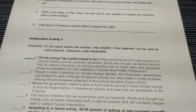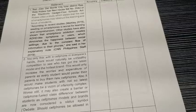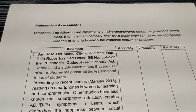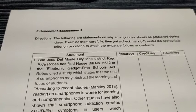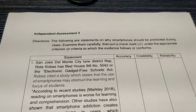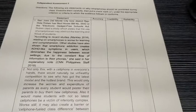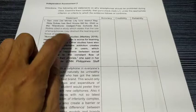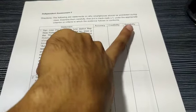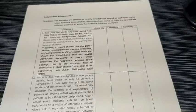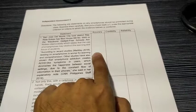The following are statements on why smartphones should be prohibited during class. Examine them carefully, then put a check mark under the appropriate criterion or criteria to which the evidence conforms. Copy the table on your answer sheet, but no need to rewrite the statements. You will have columns for the statement, accuracy, credibility, and reliability. After reading each statement, check whether it has accuracy, credibility, and reliability, based on what we discussed earlier. It goes up until number 5.